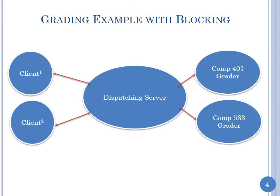Let's make this concrete with the grading example. We have a dispatching server where both 401 and 533 students can connect, but it keeps the two kinds of grading separate. There are sub-servers that get traffic — each sub-server gets part of the traffic — and the dispatcher routes each grading request to the appropriate server. You can have a hierarchy here as well.